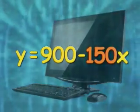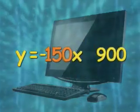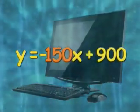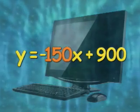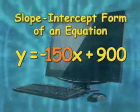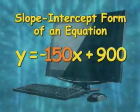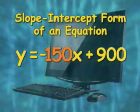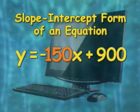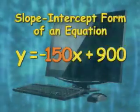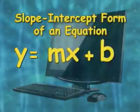Now let's change the order of the terms on the right-hand side. This doesn't change the calculation, but it does put the equation in a particular form called the slope-intercept form of an equation. In this form, you can identify important elements of the equation. In general, the slope-intercept form is expressed as Y equals MX plus B.